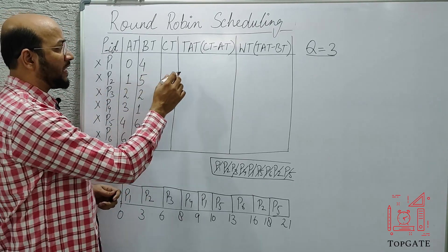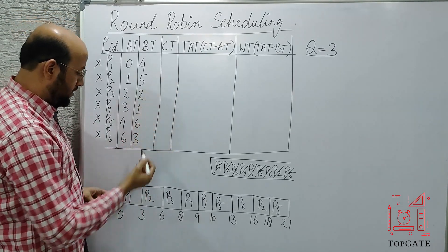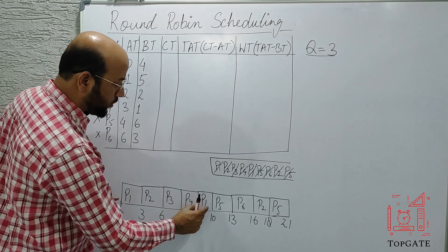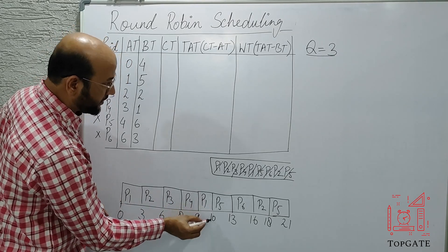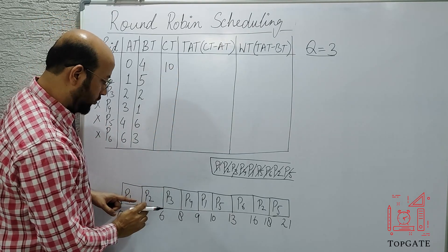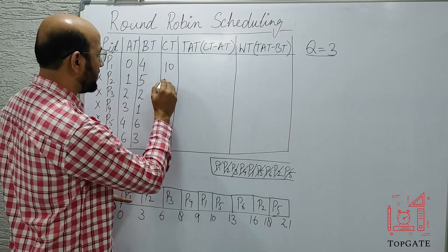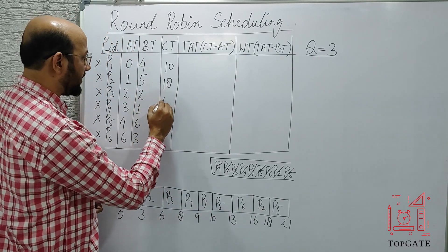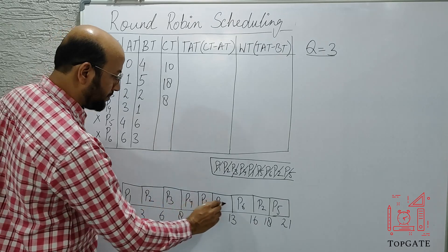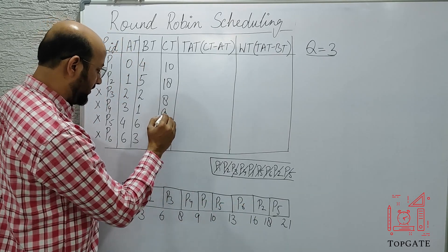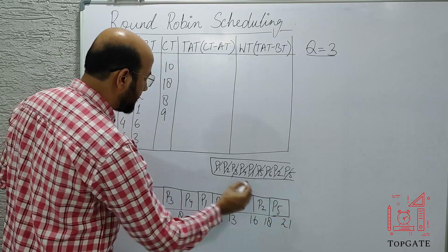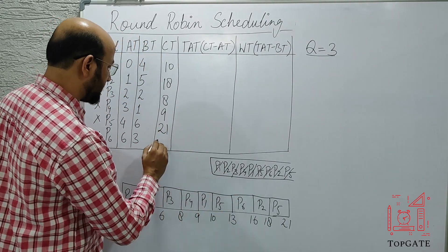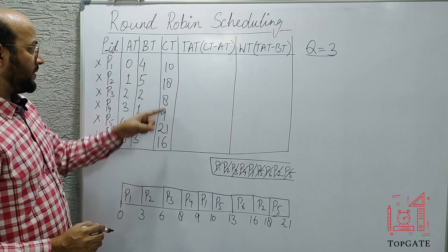Now let's quickly calculate the completion time, turnaround time, and wait time. P1 ran in two iterations so its completion time is 10. P2's completion time is 18. P3's completion time is 8. P4's completion time is 9. P5's completion time is 21, and P6's completion time is 16.